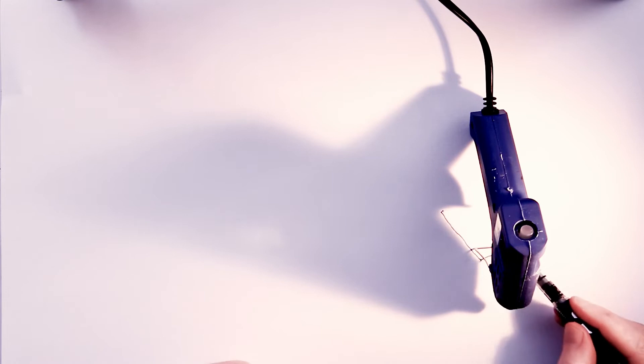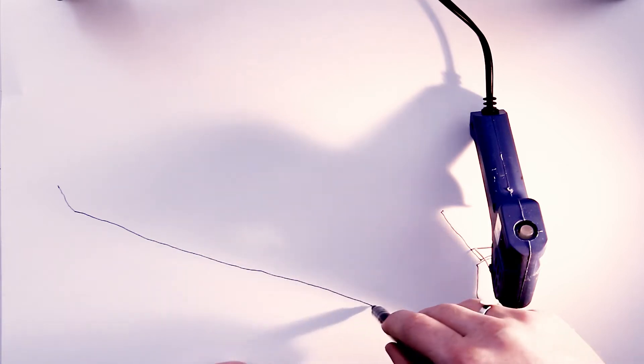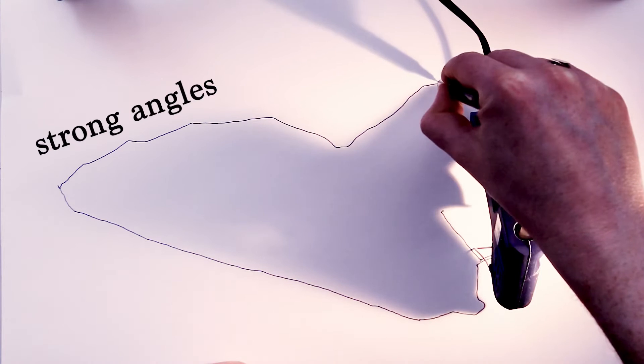I start by casting the shadow of an everyday object on a piece of paper and drawing around it. In this case I've chosen a glue gun that was on my desk. You could use anything you have to hand. Try to choose a simple object that casts a shadow with strong angles.